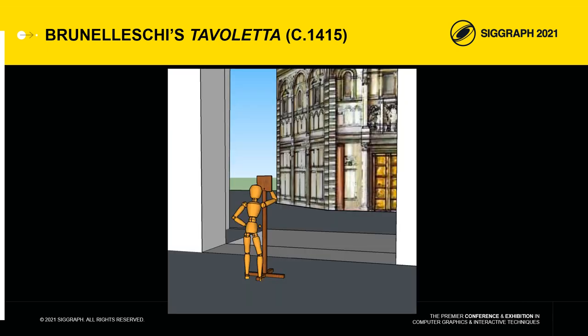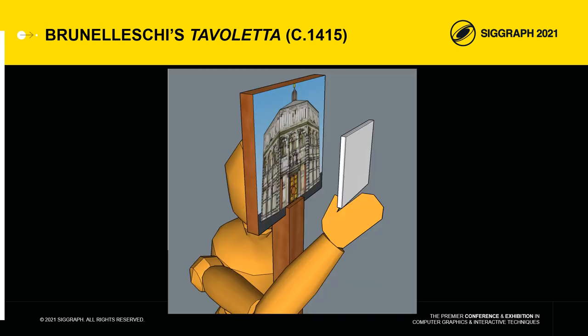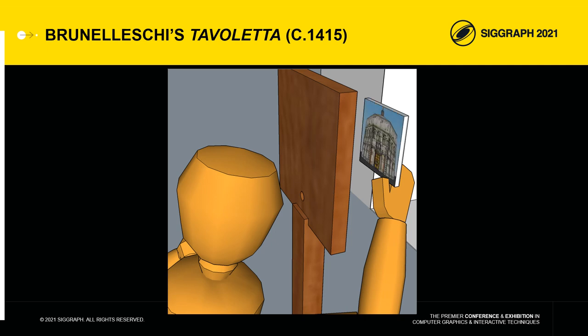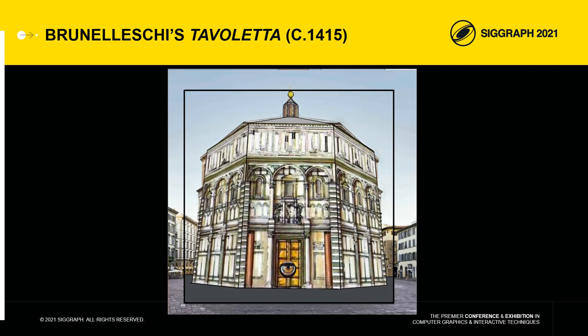According to Manetti, this tavoletta consisted of a wooden panel with a hole in it, on the back of which was painted the Baptistery over a sky that was left as mirror so that the real sky was reflected in it. The view of the panel was obtained by means of a second mirror on which the painting was reflected together with the real sky and the eye of the user through the hole. In this way, the user could verify the alignment between the painting and reality.